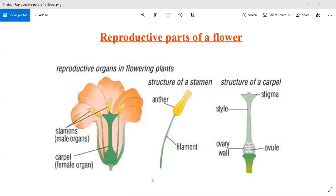We will start with the male reproductive organ, the stamen. Stamen consists of two parts: first is anther and second is filament.